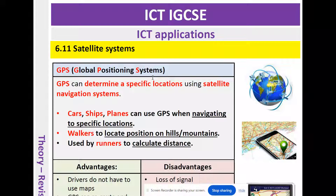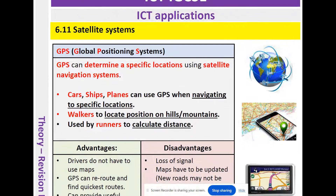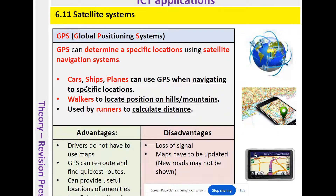When might you use GPS? A typical use is when you're in your car and you want to go to a location you're not familiar with. You use an application, enter address details, and GPS works out the route based on where you are and where you're going. GPS can determine a specific location using satellite navigation systems. Other examples include cars, ships, and planes navigating to specific locations, walkers locating positions on hills or mountains, and runners calculating distance.